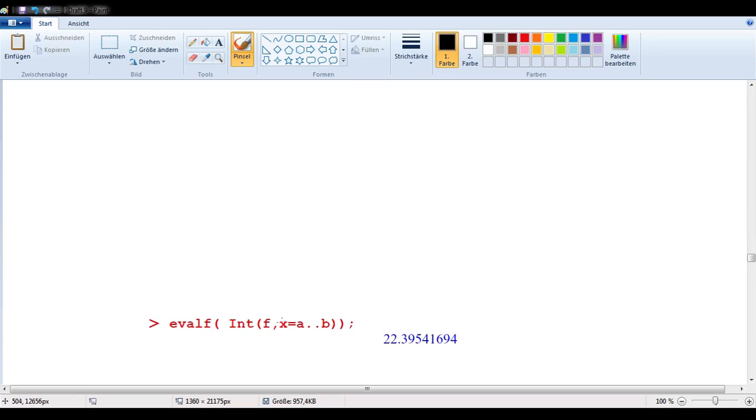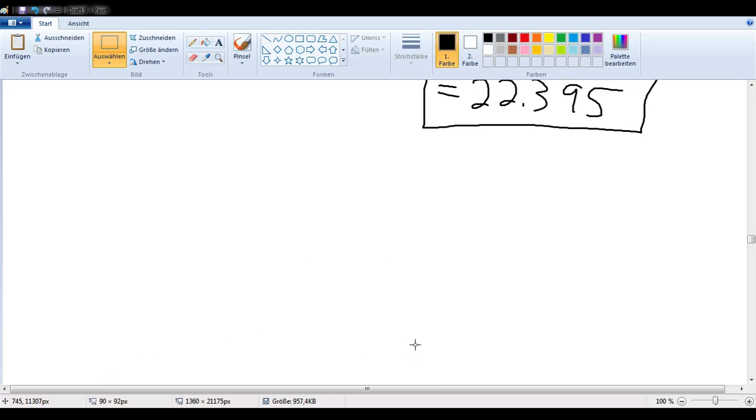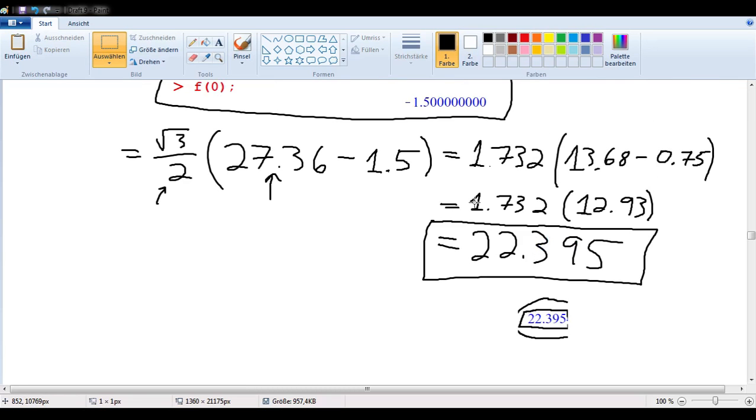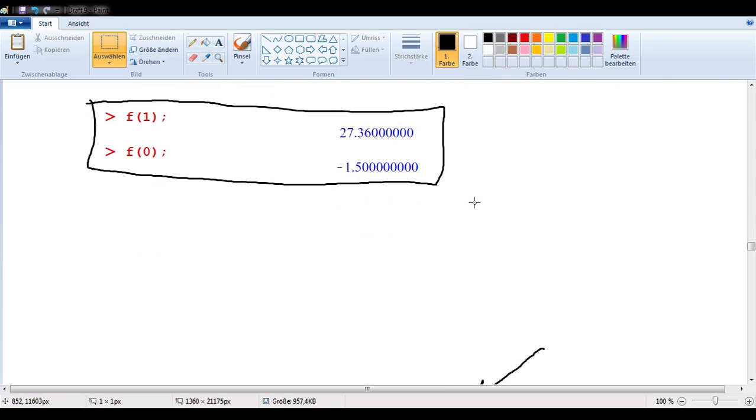So, the integral of this function, from a to b, is 22.395, etc. If we take the first three digits like I had before, 22.395. Let's see what we had before. We had 22.395. So, you see that whatever you do, whatever function you think of, up to degree 3, I will be able to estimate it exactly.